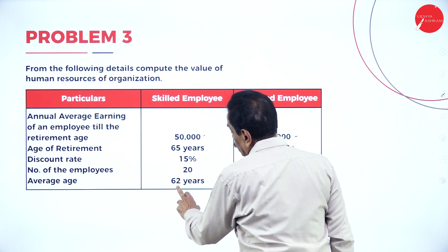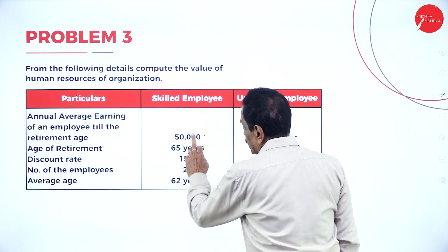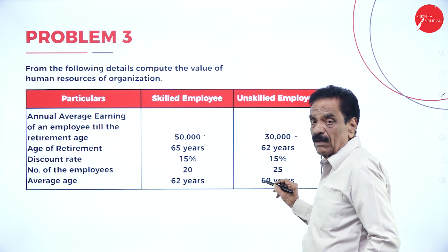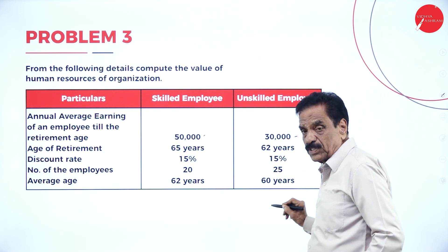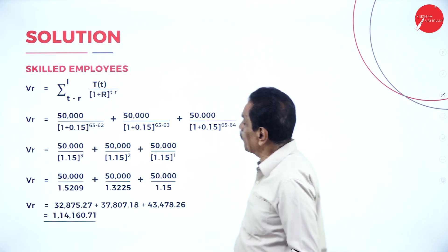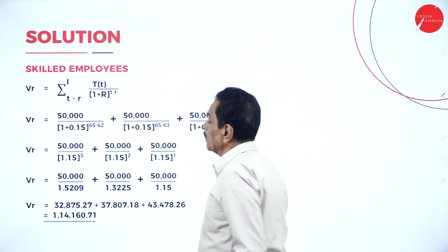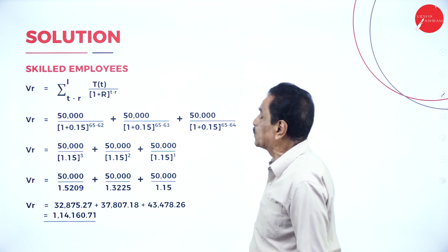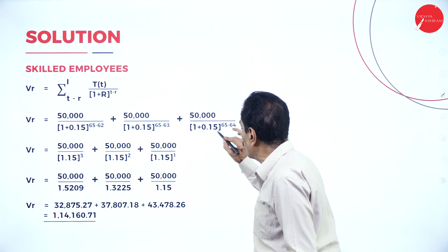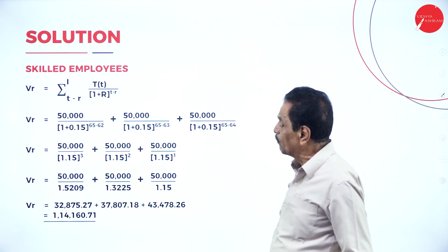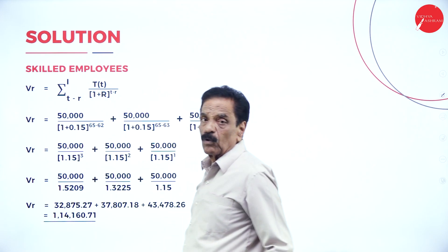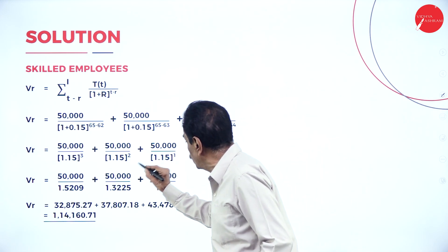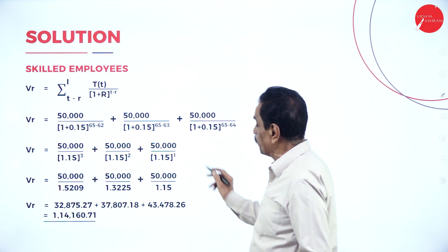For skilled employees (average age 62, retirement age 65, discount rate 15%): powers are 65 minus 62 = 3, 65 minus 63 = 2, 65 minus 64 = 1. Calculations: 50,000 / 1.15^3, 50,000 / 1.15^2, and 50,000 / 1.15^1.